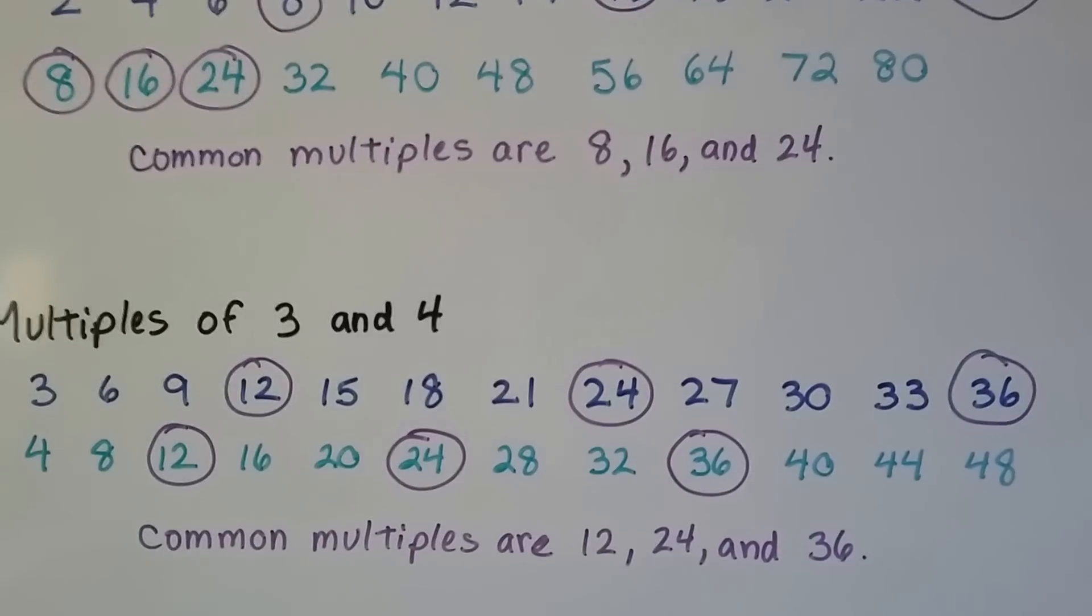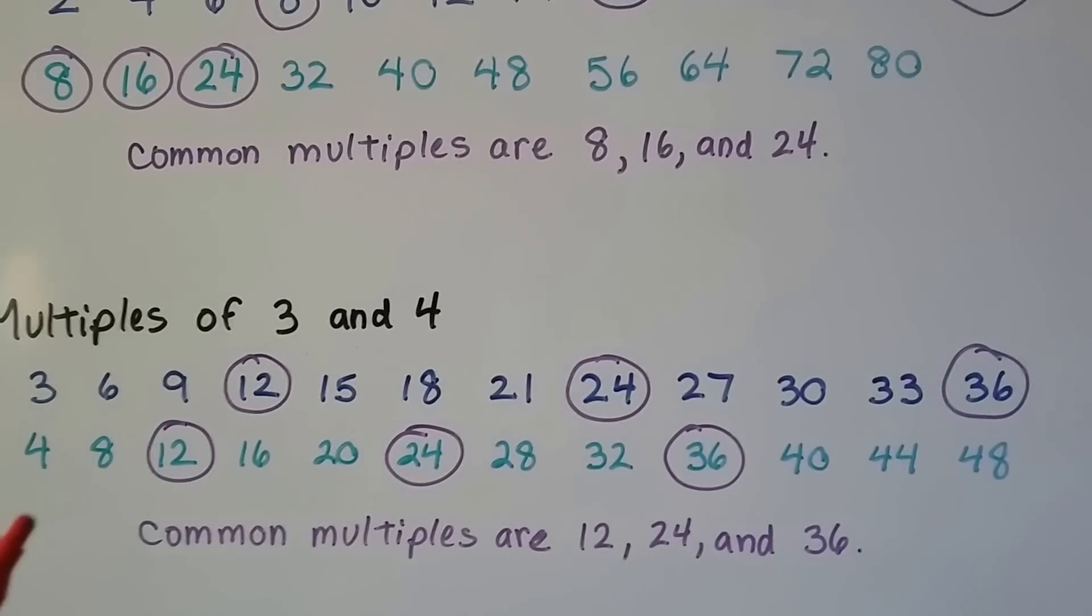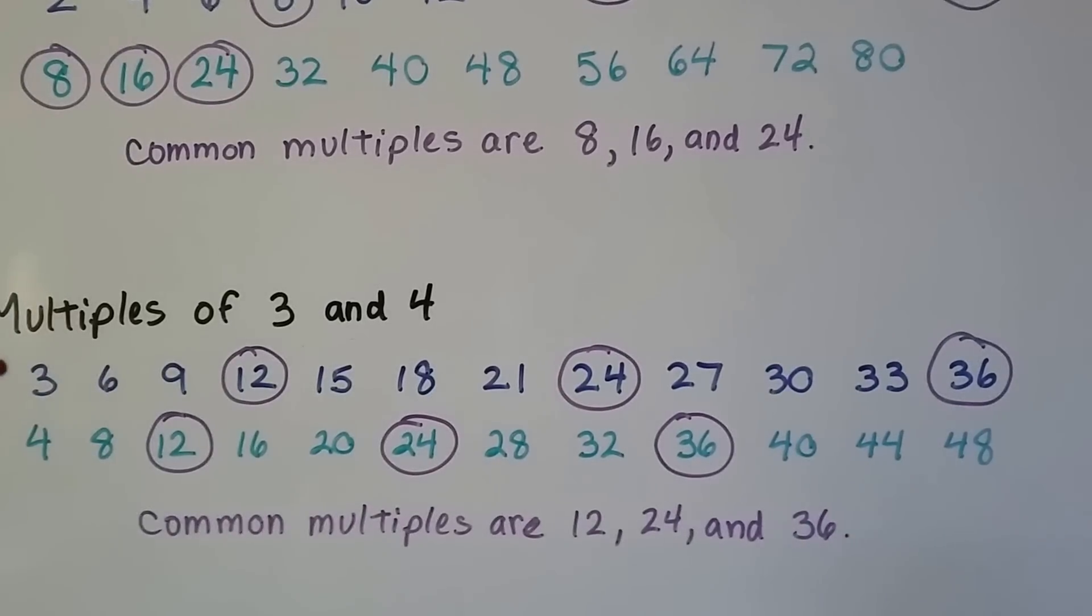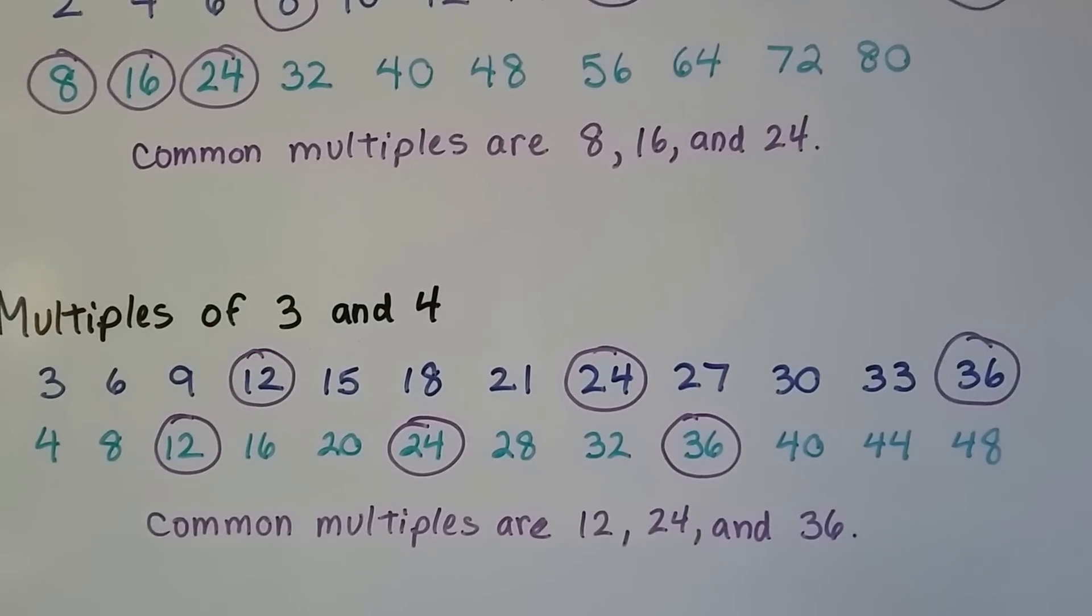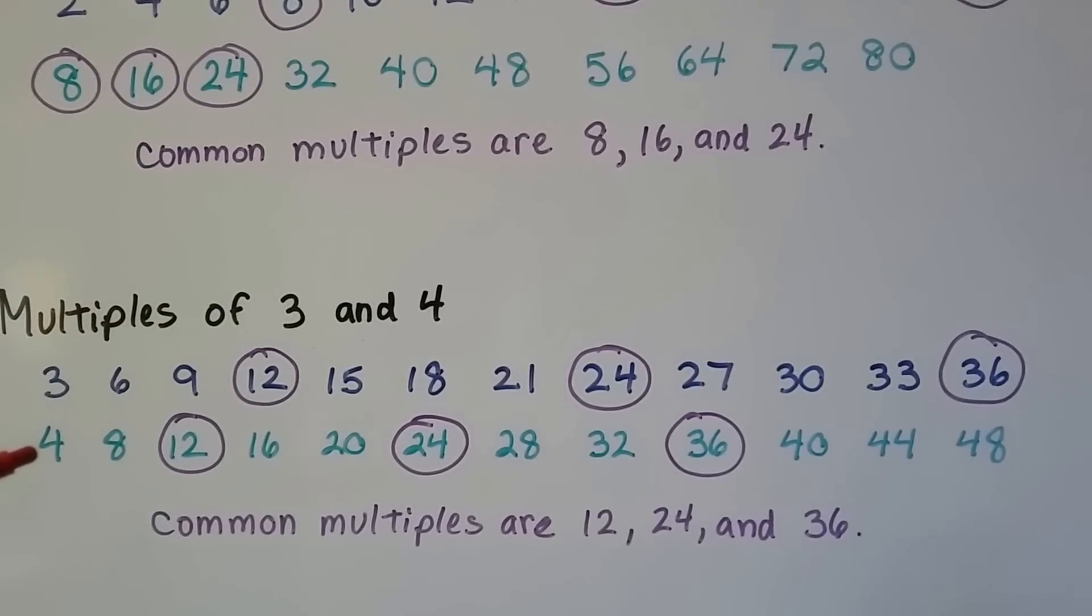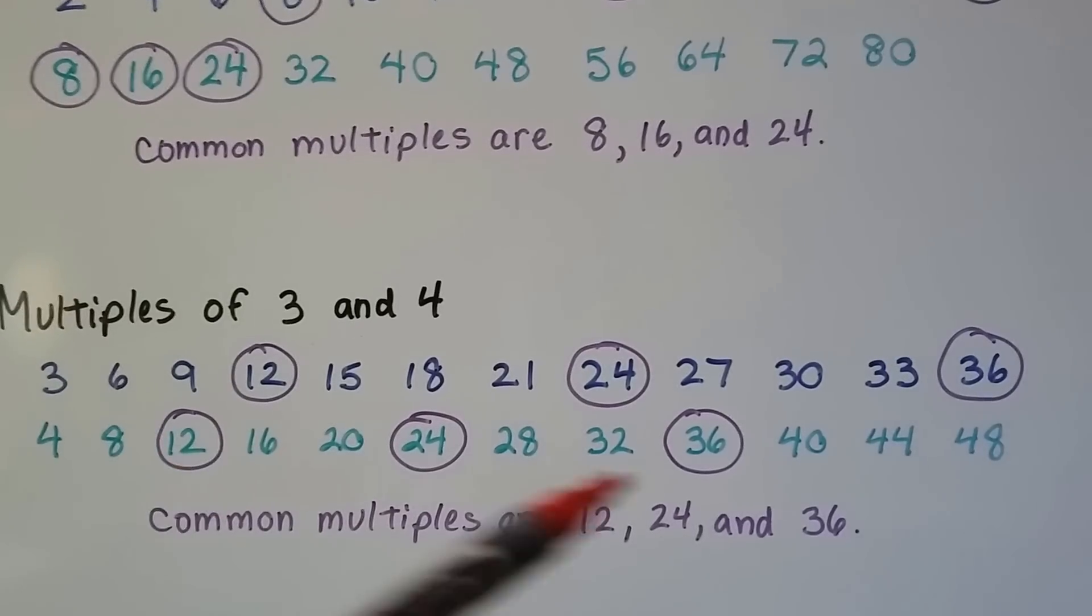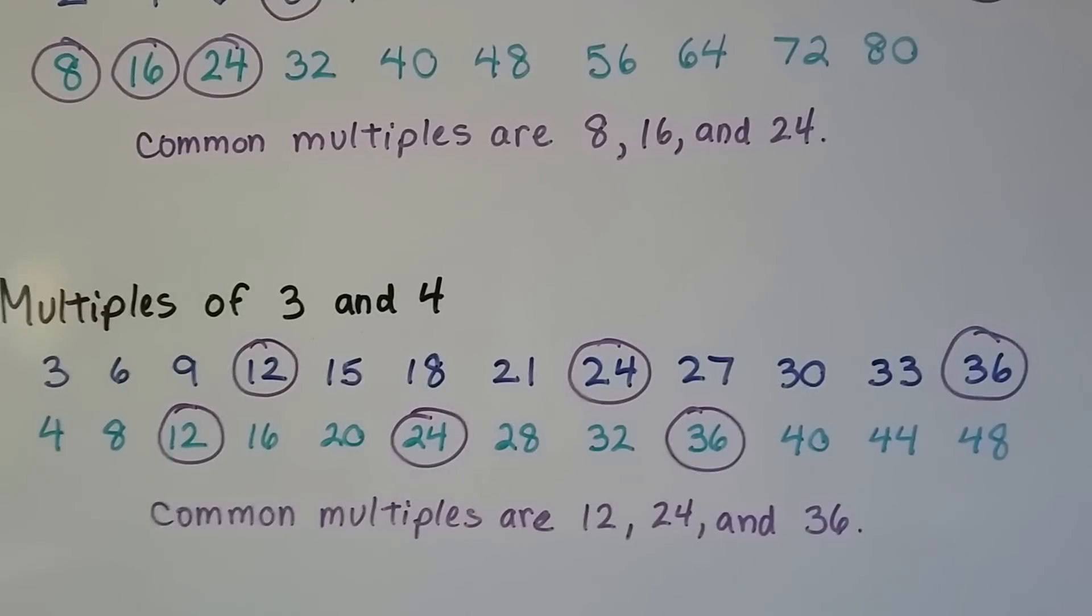For the multiples of 3 and 4, what are their common multiples? They have 12, 24, and 36 in common. Again, we made all the list of multiples for 3. 3 times 1, 3 times 2, 3 times 3, 3 times 4. We did the same thing for the 4s. 4 times 1, 4 times 2, 4 times 3, and we kept going. And we circled the ones they have in common. 12, 24, and 36.